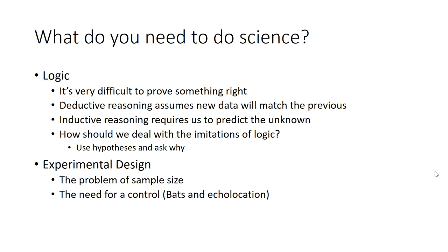A control is not just controlling all variables — that's not what a control is. A control is a baseline, a group you compare your experimental data to. In Spallanzani's work with bats, blocking their ear canals caused them to hit more wires. The concern was whether they hit more wires because they can't hear, or because they have bulky objects in their ears. So his control became bats wearing hollowed-out pieces in their ears — carrying extra weight and discomfort but still able to hear.